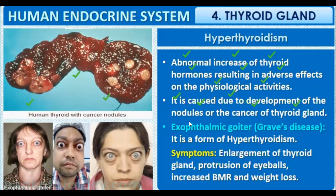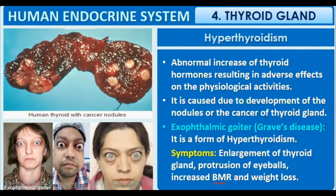Exophthalmic goiter, also called Graves' disease, is a type of hyperthyroidism. It involves enlargement of the thyroid gland along the trachea, protrusion of the eyeballs, increased BMR, and day-by-day weight loss. It is considered acute hyperthyroidism and can also occur in cancer cases.